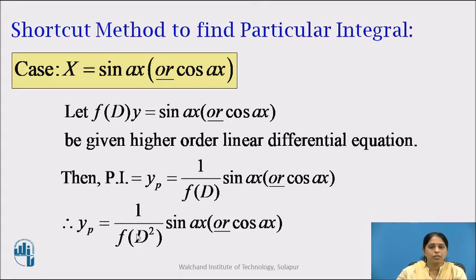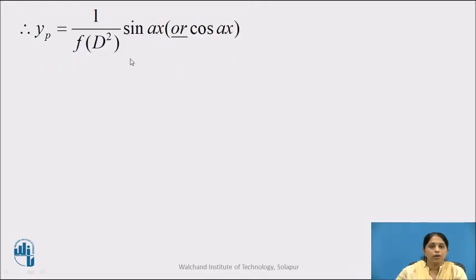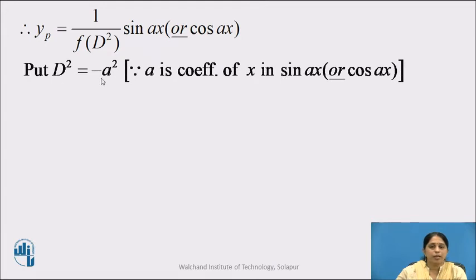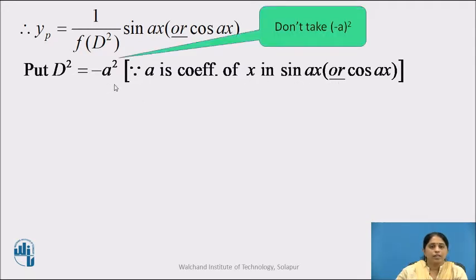So we write yp as 1 upon f(D²) into sin x or cos x. We then put D² = −a², where a is the coefficient of x in sin x or cos x. Note: do not take −a² as −(a)², because −(a)² gives +a², whereas here we take a² first with the negative sign, so D² is replaced by −a².